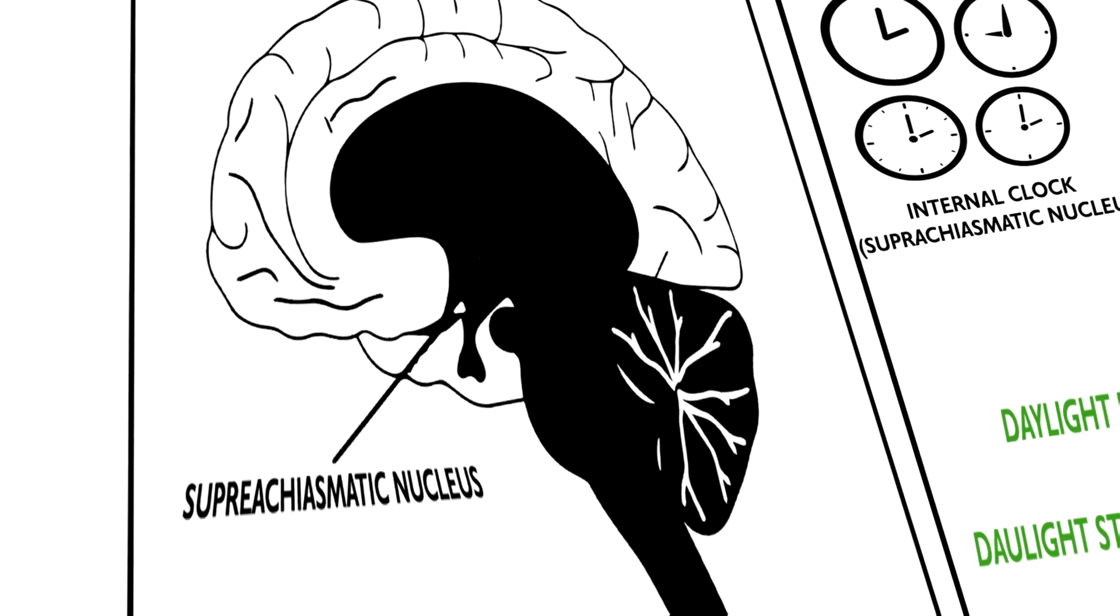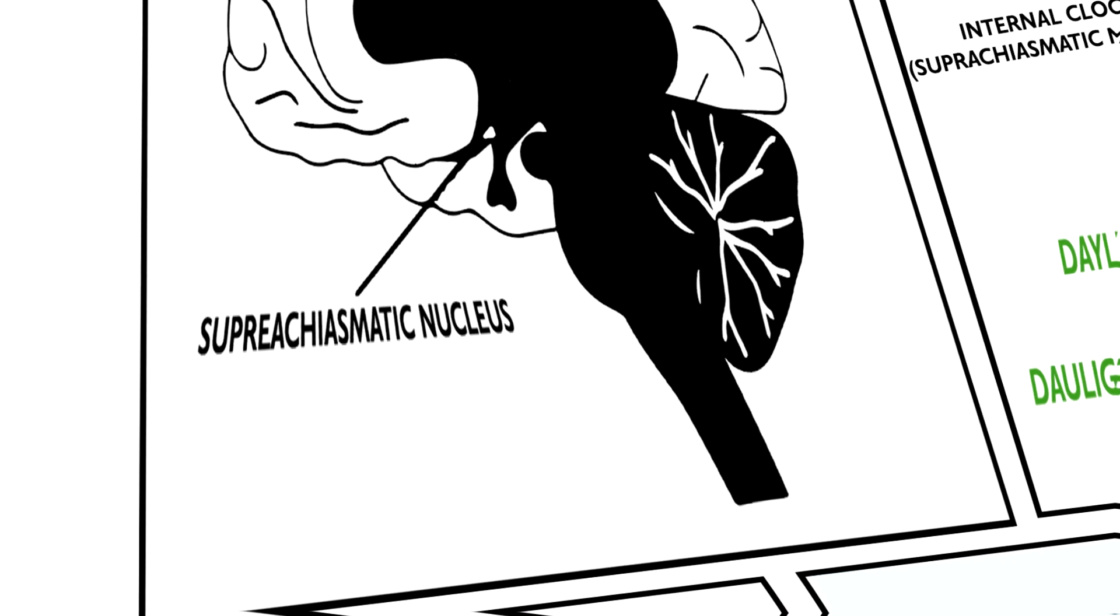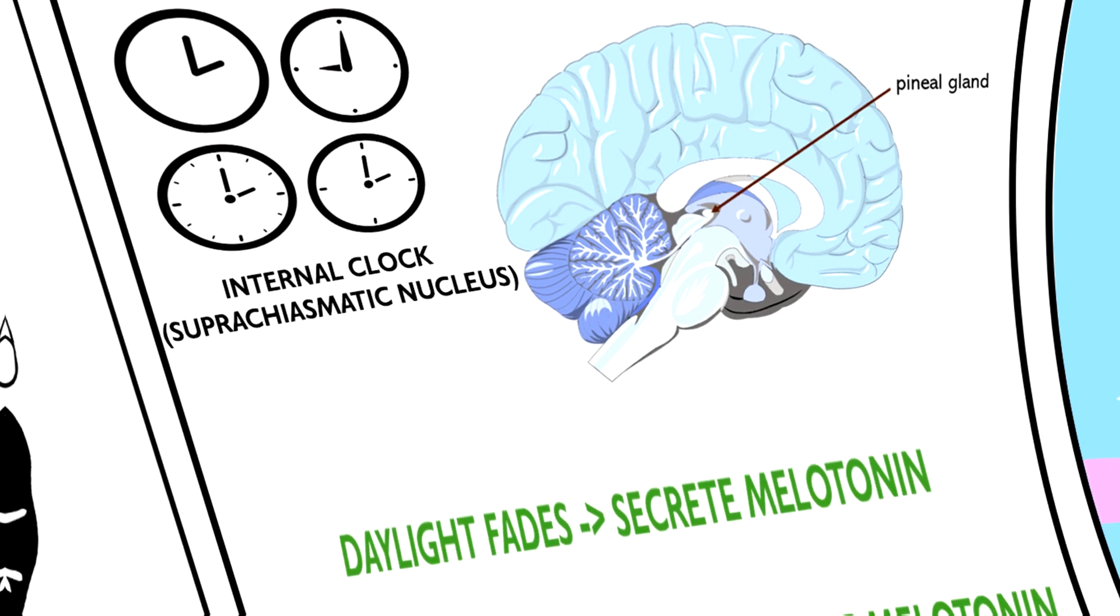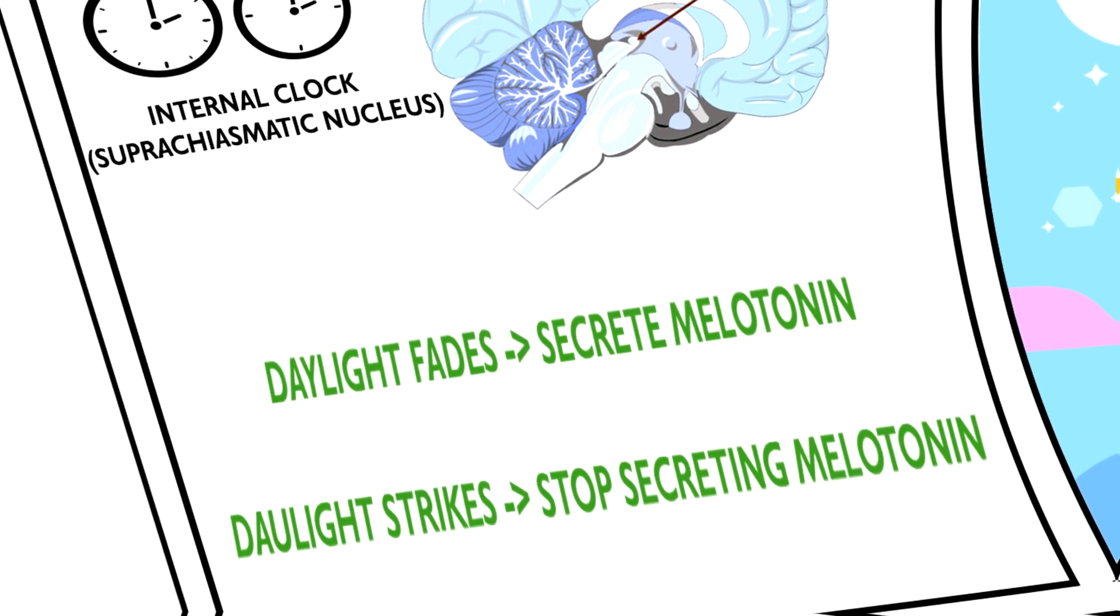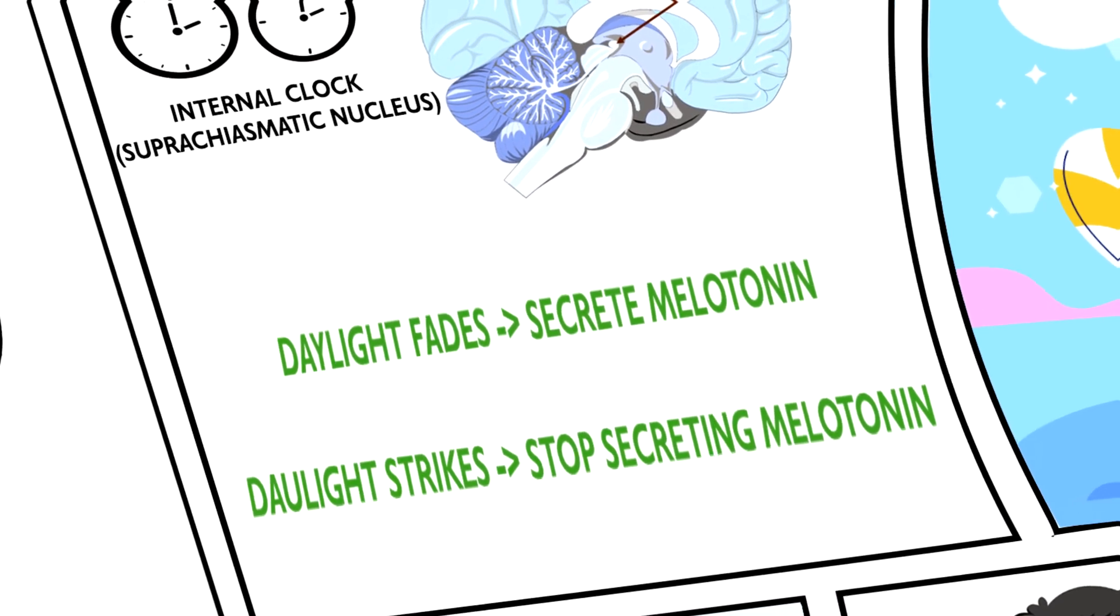I just like to think of it as a very charismatic nucleus. So this suprachiasmatic nucleus, or the internal clock, is sensitive to light. When the daylight fades in the evening, it tells the pineal gland to secrete melatonin, which is a hormone responsible for sleep. As melatonin accumulates in your brain, you feel sleepy.